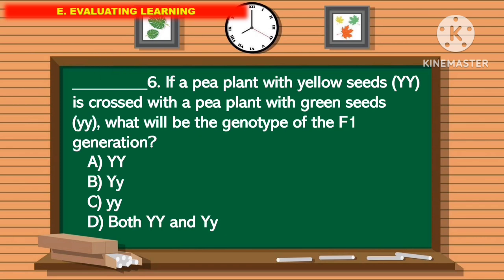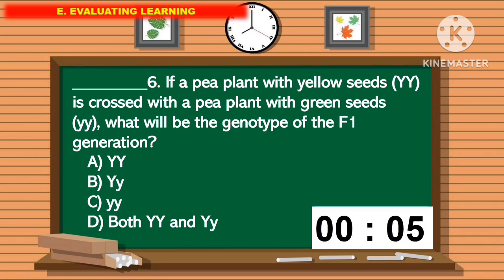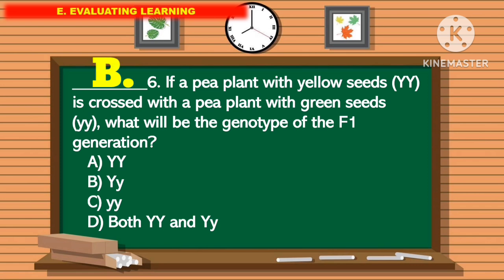For question number 6, if a pea plant with yellow seeds is crossed with a pea plant with green seeds, what will be the genotype of the F1 generation? The correct answer is letter B.